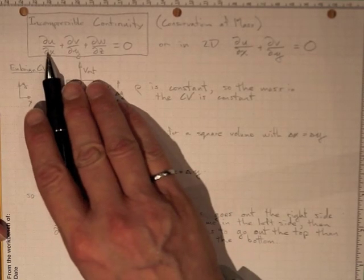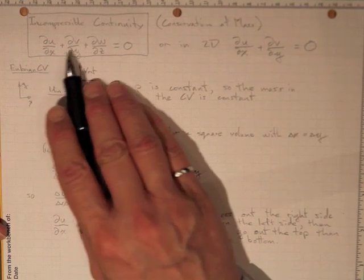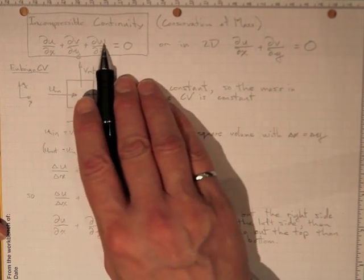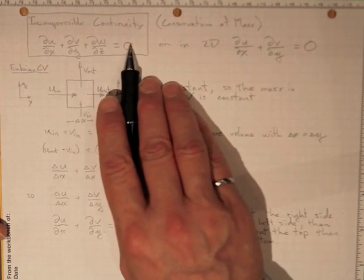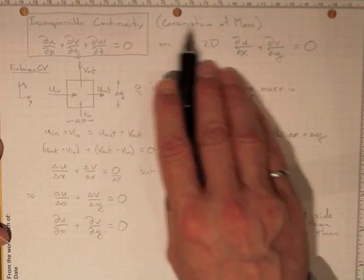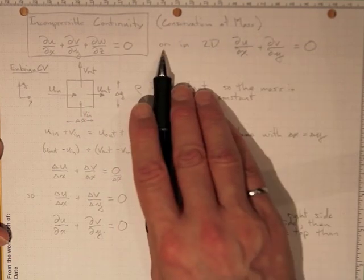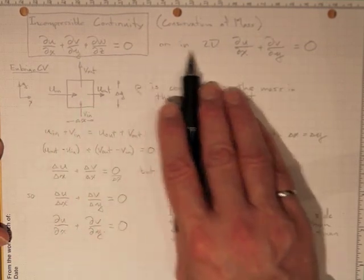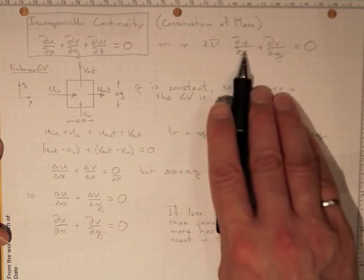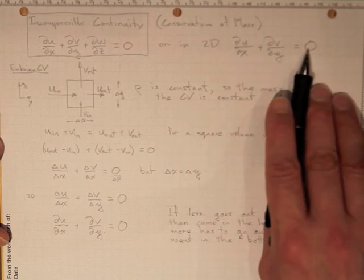The incompressible continuity equation has this form: ∂u/∂x + ∂v/∂y + ∂w/∂z = 0. It's a conservation of mass equation. That's in three dimensions. In two dimensions, it's ∂u/∂x + ∂v/∂y = 0.